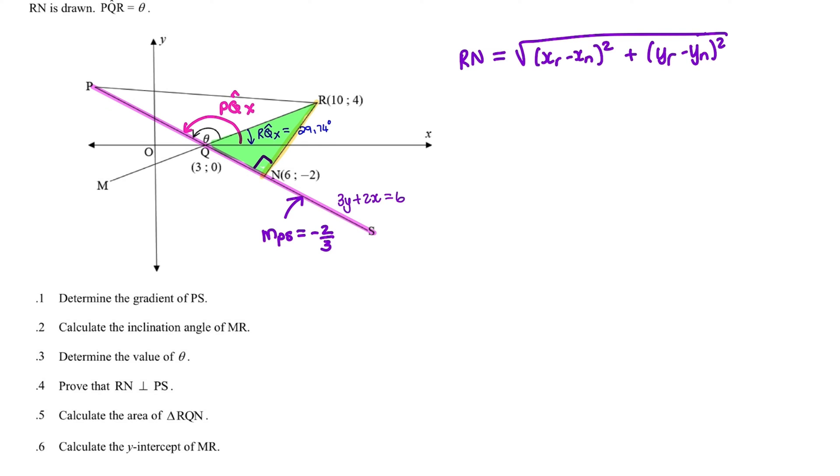Now this formula is also on your formula sheet. And when I substitute, I have 10 minus 6 squared plus 4 minus minus 2 squared. And I take the square root of that. And that answer is the square root of 52. So we have the length of RN.